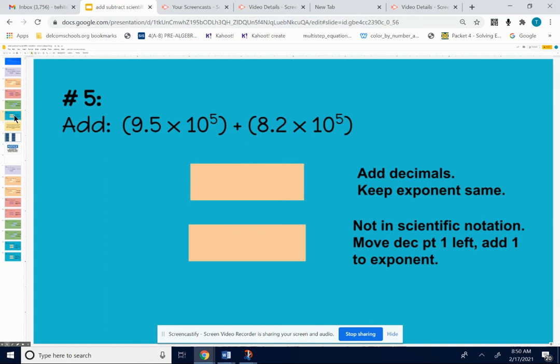Add 9.5 times 10 to the fifth plus 8.2 times 10 to the fifth. The exponents are good. They're matched up. So I know it's going to be times 10 to the fifth. All I need to do is add 9.5 to 8.2. Decimal points lined up. That would give me 17.7, times 10, control period, to get my exponent of 5. 17.7 times 10 to the fifth.